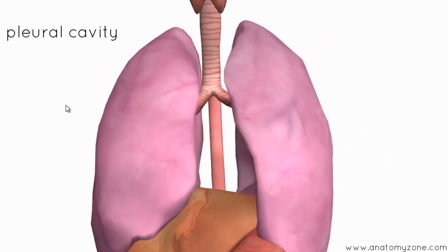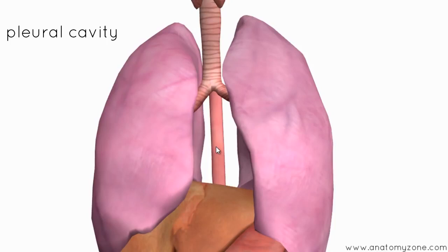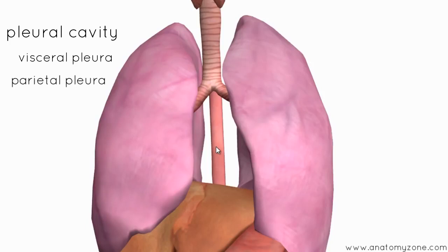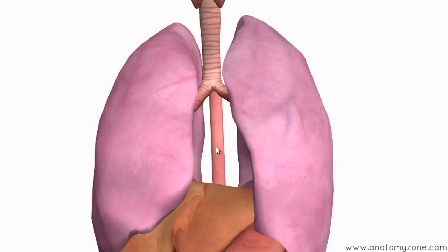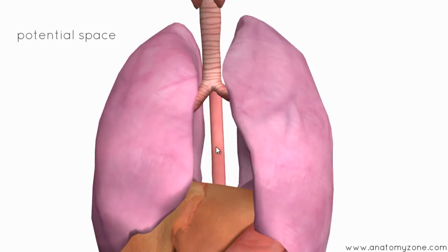The lungs themselves are surrounded by a pleural cavity, visible here in pink. The pleura are serous membranes which line the lungs. There's a visceral pleura and a parietal pleura. The visceral pleura lies closely and adheres to the lung tissue, while the parietal pleura lines the thorax. Both pleural layers are continuous at the hilum. Between them is the pleural cavity, which contains pleural fluid. This space is only a potential space — in normality these layers lie in very close contact with just a thin layer of pleural fluid between them.